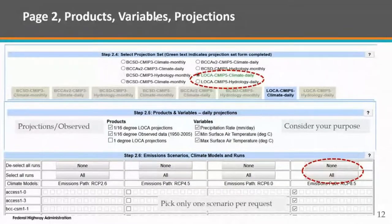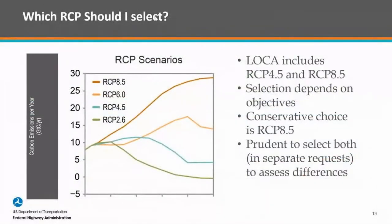That RCP decision is something you have to make for every project. What we normally say is pick both to see the results and the range, which helps you understand your risk. But be careful: you don't want to pick both together because the tool averages them out, and that's not necessarily right. These are nonlinear processes — if you take the halfway point between 2 squared and 10 squared, that's not necessarily going to give you 6 squared. You don't want to do that.